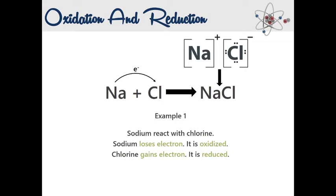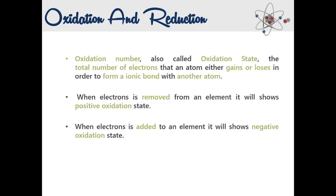This is how two atoms, both initially with zero charges, become ions and eventually form an ionic compound. Oxidation number is the total number of electrons that an atom either gains or loses in order to form a chemical bond with another atom. To simplify it, it indicates the changes of charges of an atom in a reaction, giving you a clearer picture of what is happening with charges and electrons.